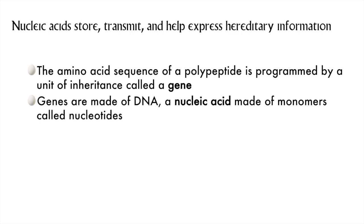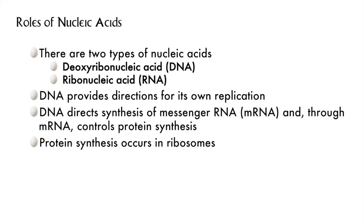We come to the fourth type of biological molecules: nucleic acids. Nucleic acids encode the instructions for how to make proteins, among other things. Nucleic acids come in two types: deoxyribonucleic acids, or DNA, and ribonucleic acids, or RNA.